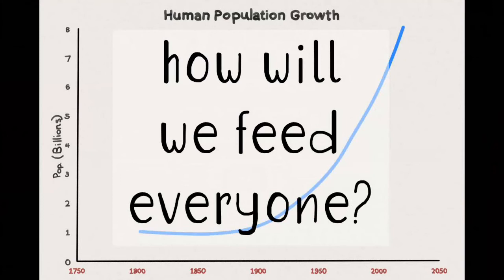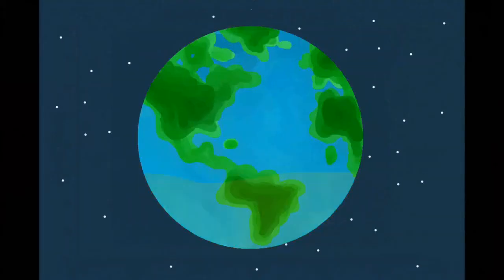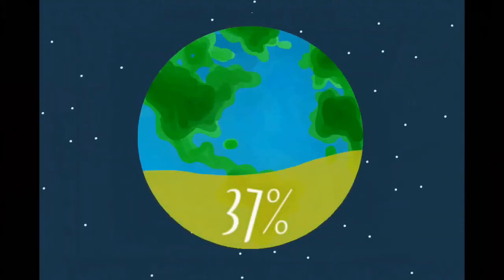As the population of the Earth grows so rapidly, how will we feed everyone? Currently, 37% of our planet's surface is used for agriculture.